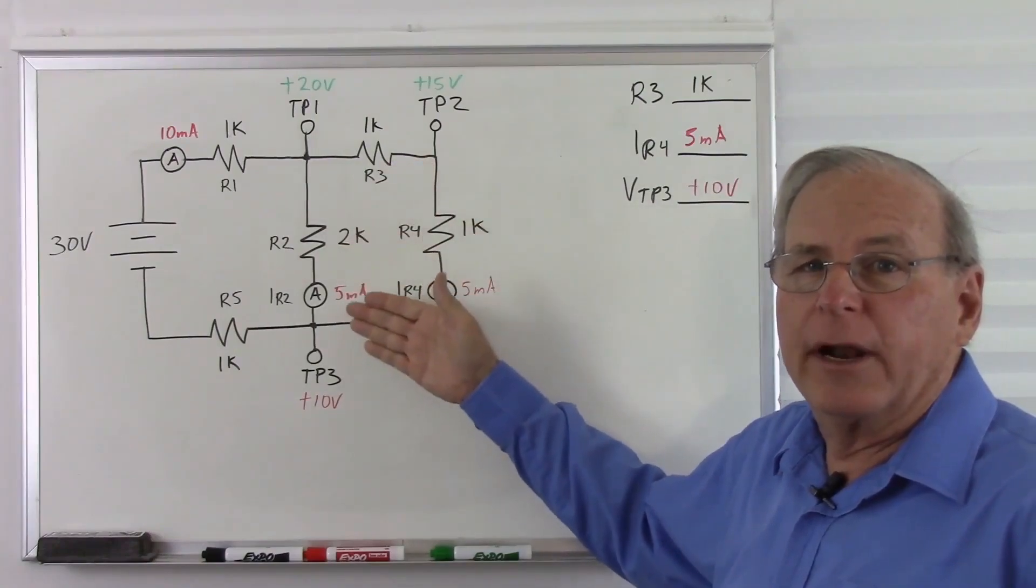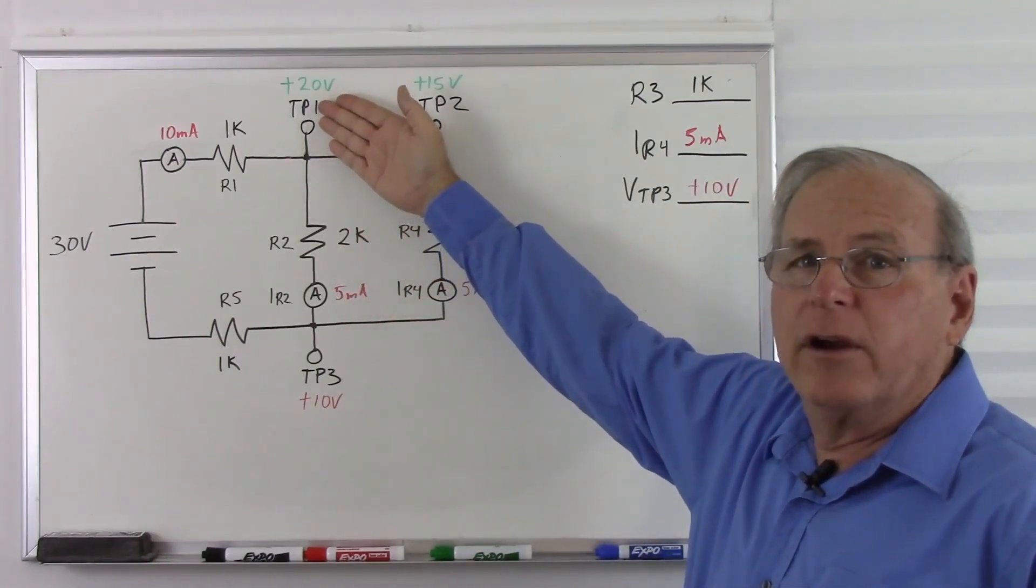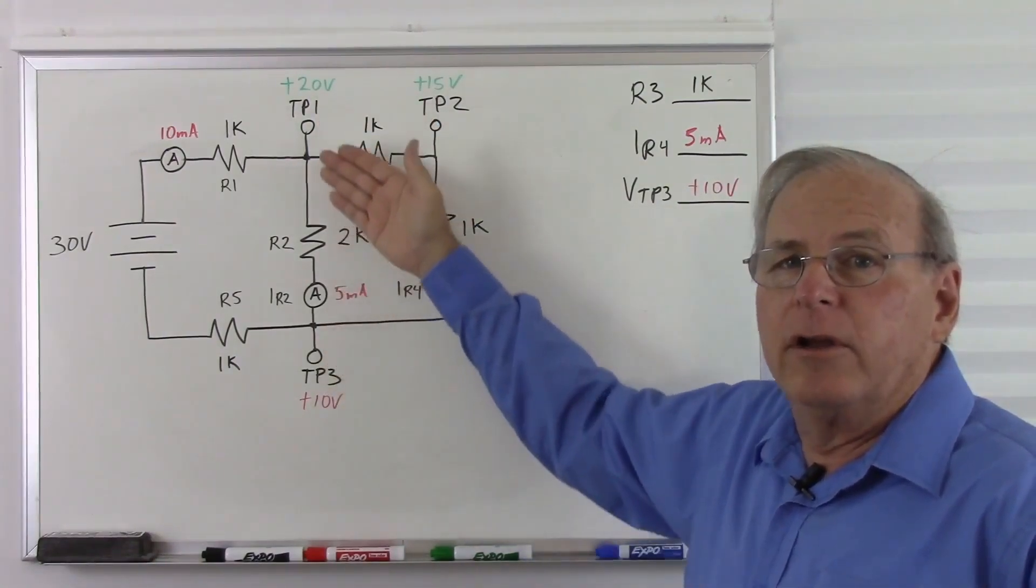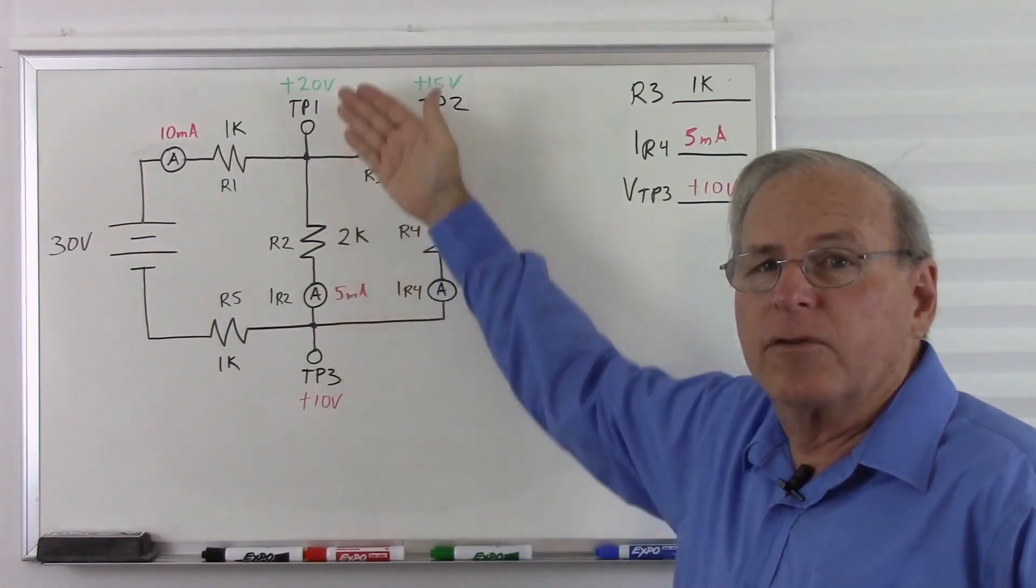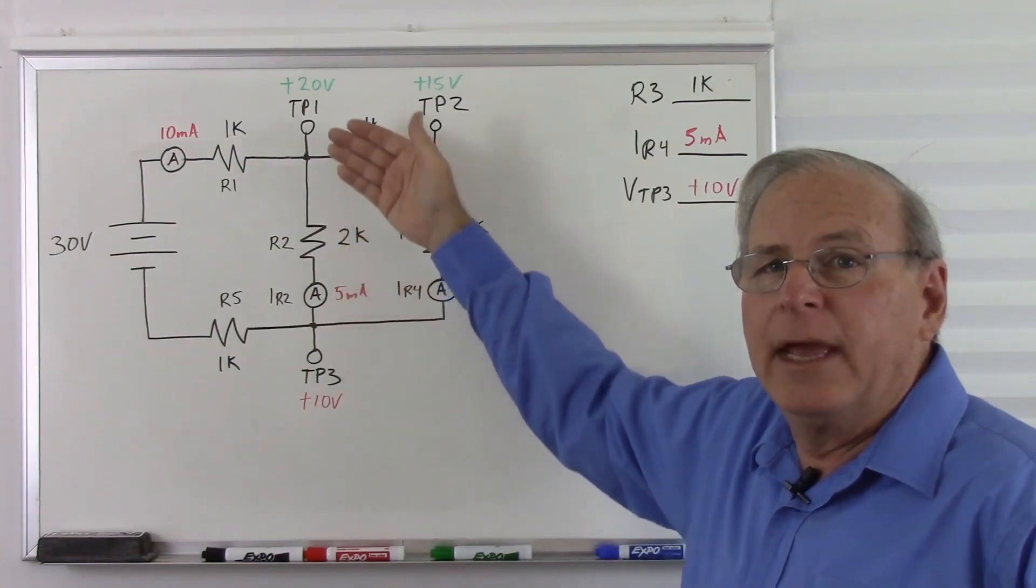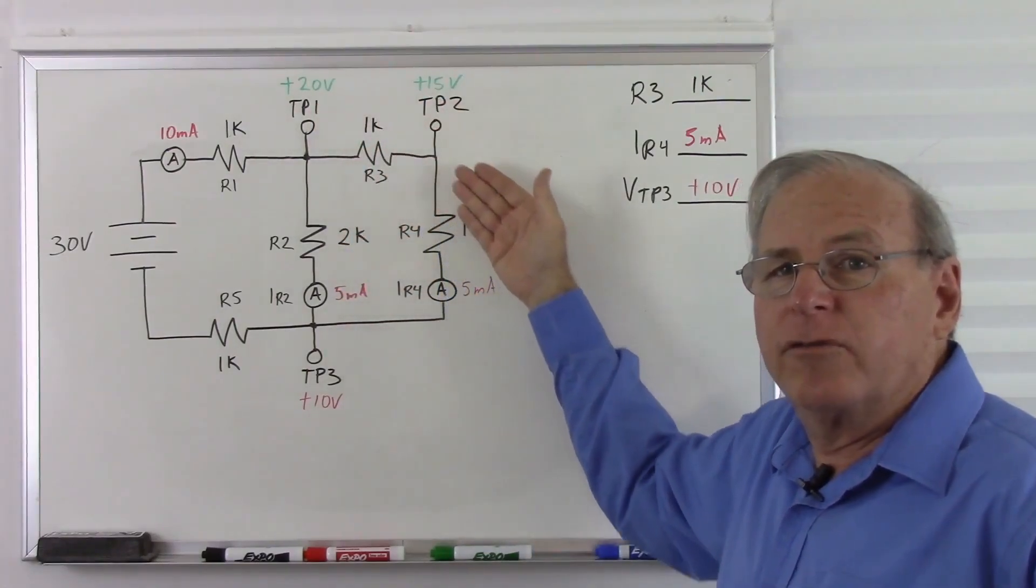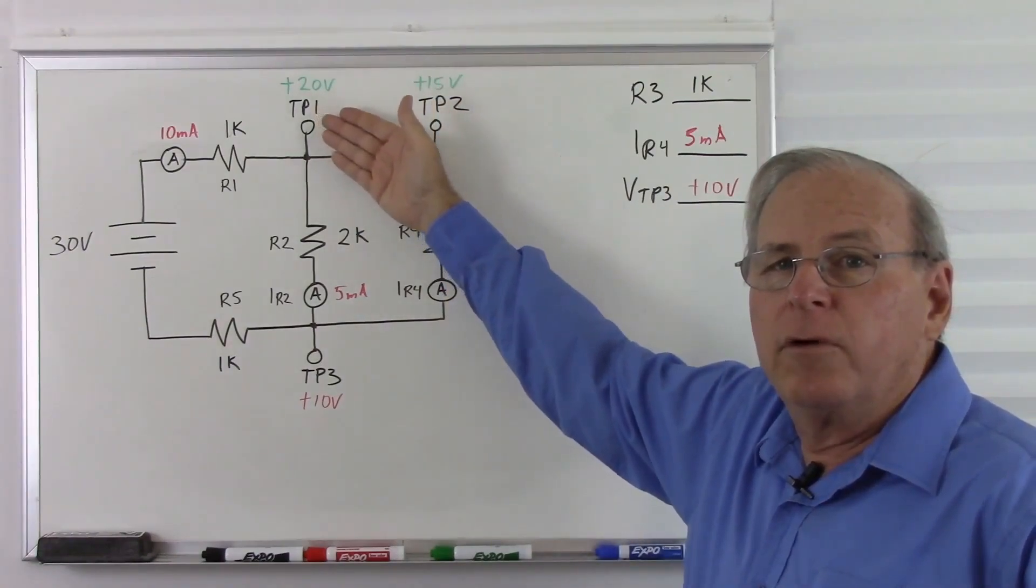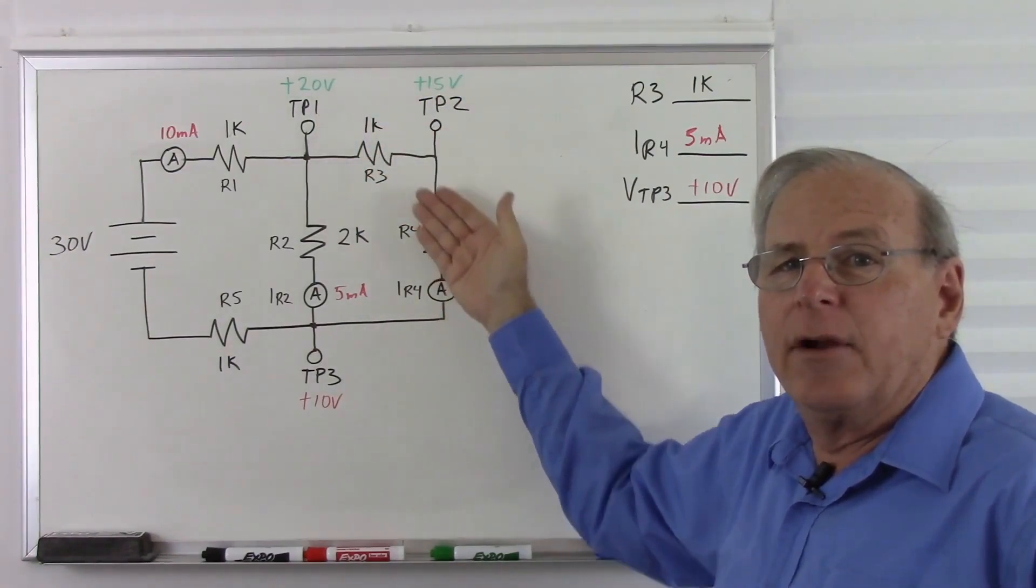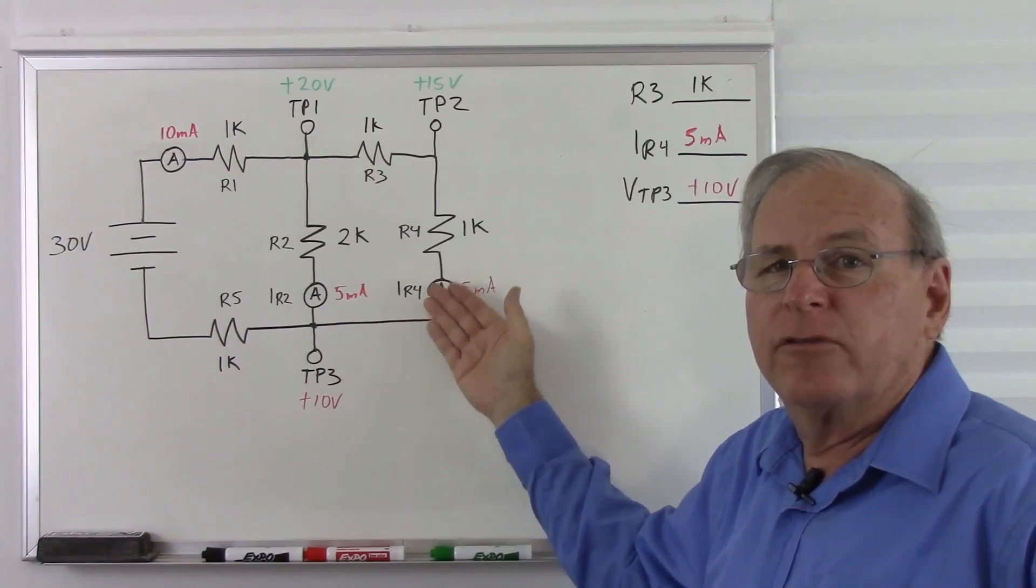Let's check this some other ways to make sure we got it right. So we have 20 volts here and 10 volts here. So we start with 20, we lose 10, leaving 10 left over. So there's 10 volts between here and here.